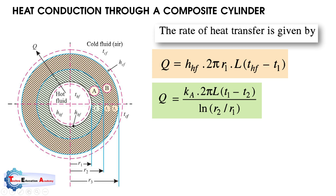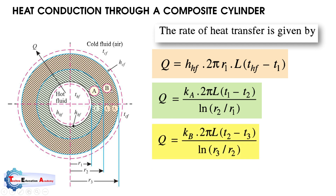In layers A and B, conduction takes place, so it follows Fourier's law: Q = −k·A·dT/dx, which we have already derived. For layer A, the thermal conductivity is K_a, the area in logarithmic form is 2πL, and the temperature difference is T1 minus T2, with ln(r₂/r₁) in the denominator. Similarly, for layer B, the heat transfer equation uses K_b, temperature difference T2 minus T3, and ln(r₃/r₂) in the denominator.